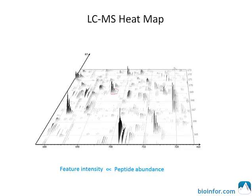This is the MS1 spectrum. This figure shows a heat map of the mass spec signals generated by peptides eluting from the column. The map depicts all peptide features detected by the instrument with the complexity of elution and isotope patterns. The intensity of a peptide feature is proportional to the abundance and concentration of the peptide in the sample.